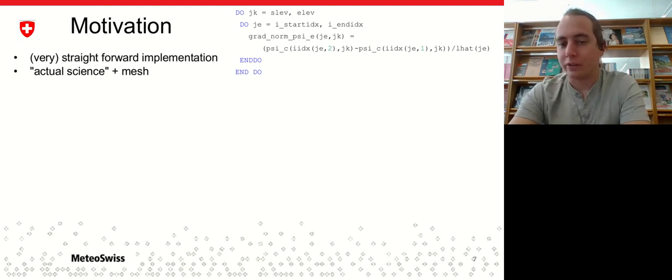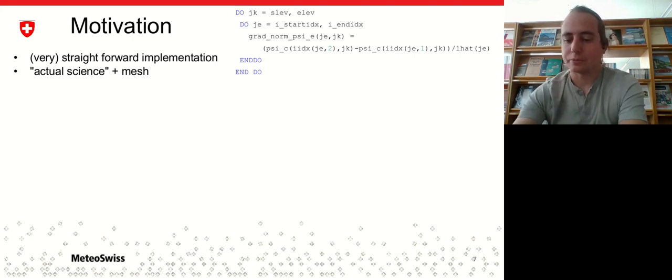On this slide you can see just one very simple formulation on how you could do that on a finite volume grid across an edge. Here on the right-hand side, we can see a very first try using Fortran, because it's still the language of rank in weather and climate. What you can see here is basically the loops over the domain, the vertical and the horizontal loop. You have some neighbor tables, like this IIDX would be a neighbor table. Basically what we have here is the actual science plus the mesh in the domain.